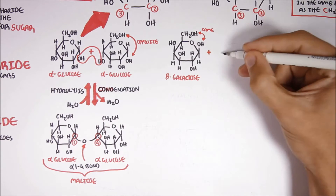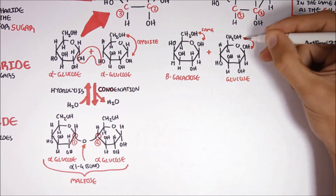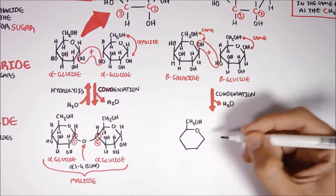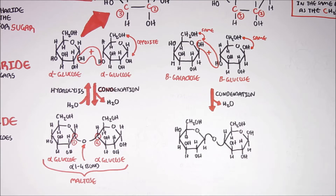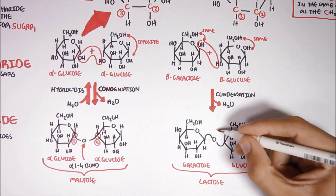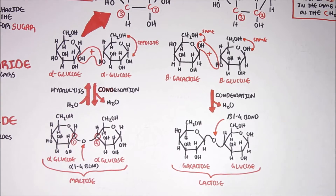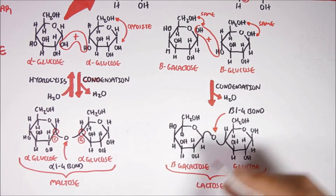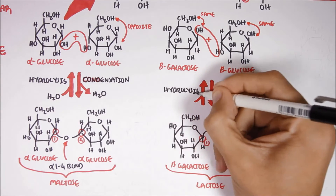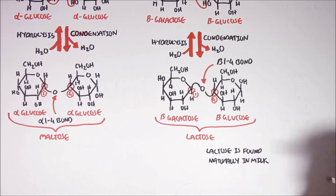This galactose molecule can link with a glucose molecule. This glucose molecule is in a beta configuration because the hydroxyl group is pointing the same direction as carbon number six. So this galactose and glucose can form a link and through the condensation process it will form lactose. Lactose is made up of galactose and glucose, linked together by a beta-1,2,4 glycosidic bond — called beta-1,2,4 because the galactose and glucose are in a beta configuration and carbon number one and carbon number four are involved. The reverse reaction to break lactose requires hydrolysis by adding water. Lactose, as you all probably know, is found naturally in milk.